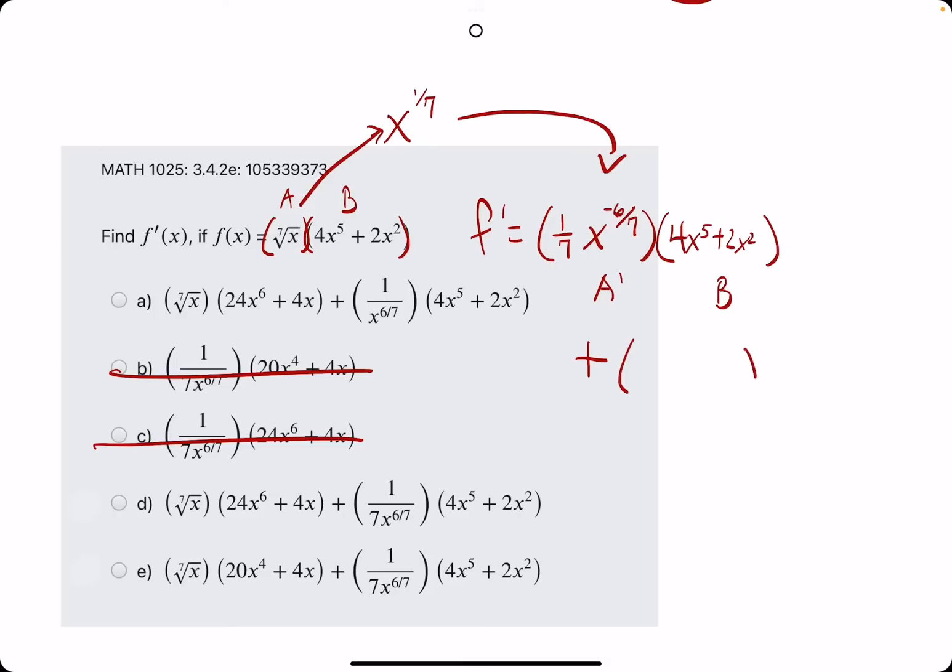And then we add A times B prime. So, A is the original 7th root of x, and B prime is the derivative of B. So, 20x to the 4th plus 4x.